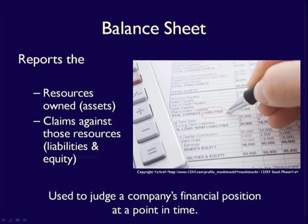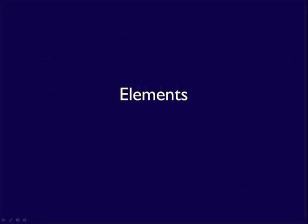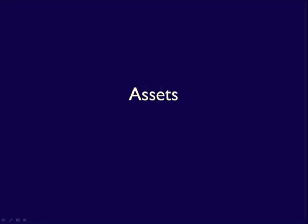In order to understand the Balance Sheet, we first have to understand the elements that make up this statement: assets, liabilities, and equity, also called shareholders' equity. Each element has characteristics that define them. When we record the activities of a business, we use these characteristics to determine if the transaction will affect that element or not. Let's look at each element individually, starting with assets.